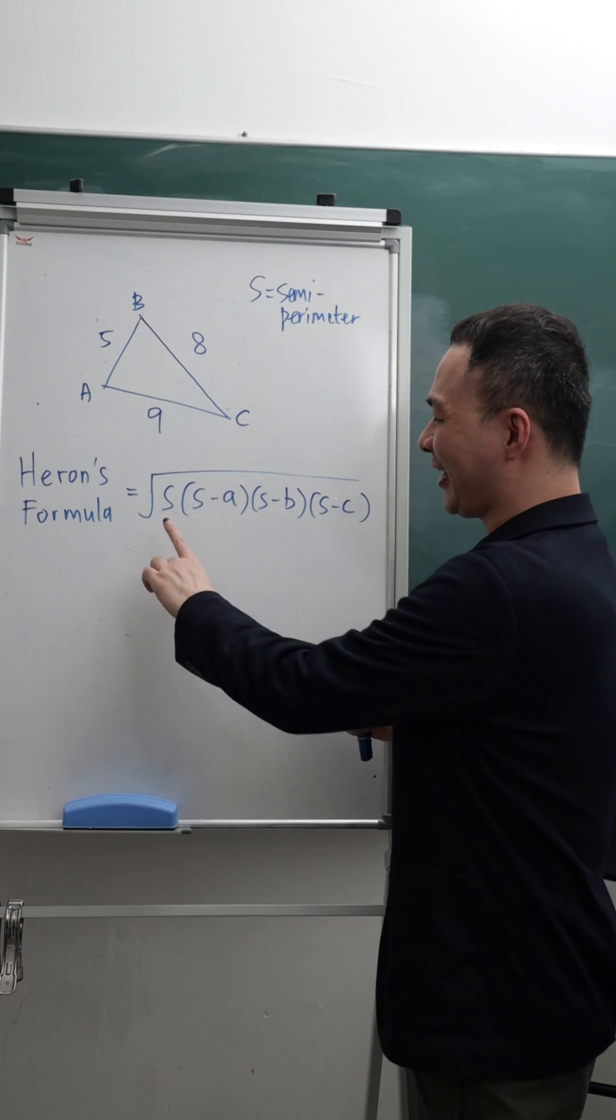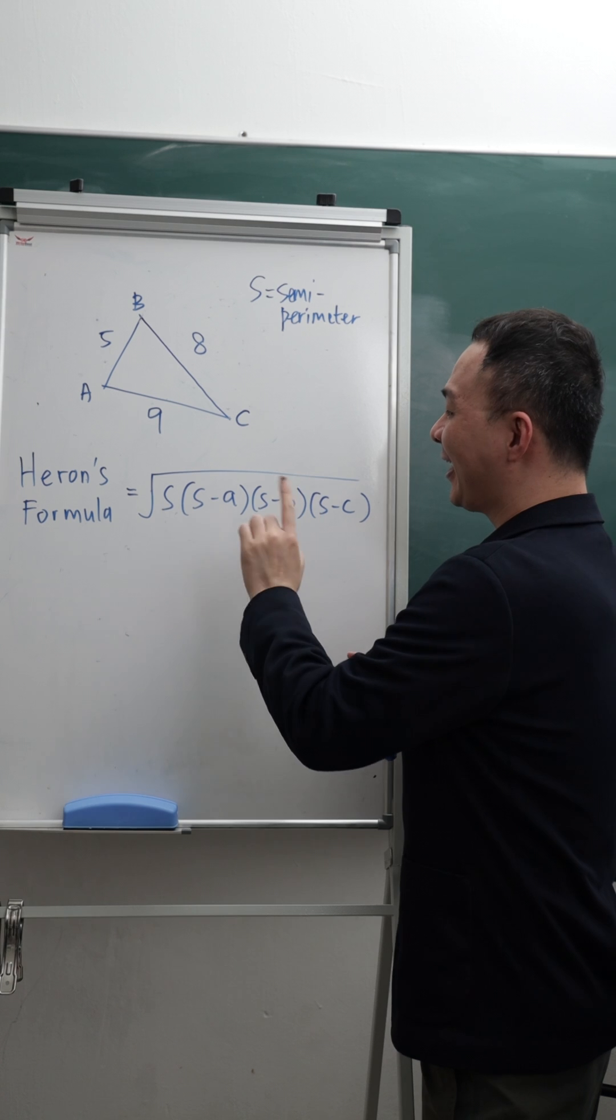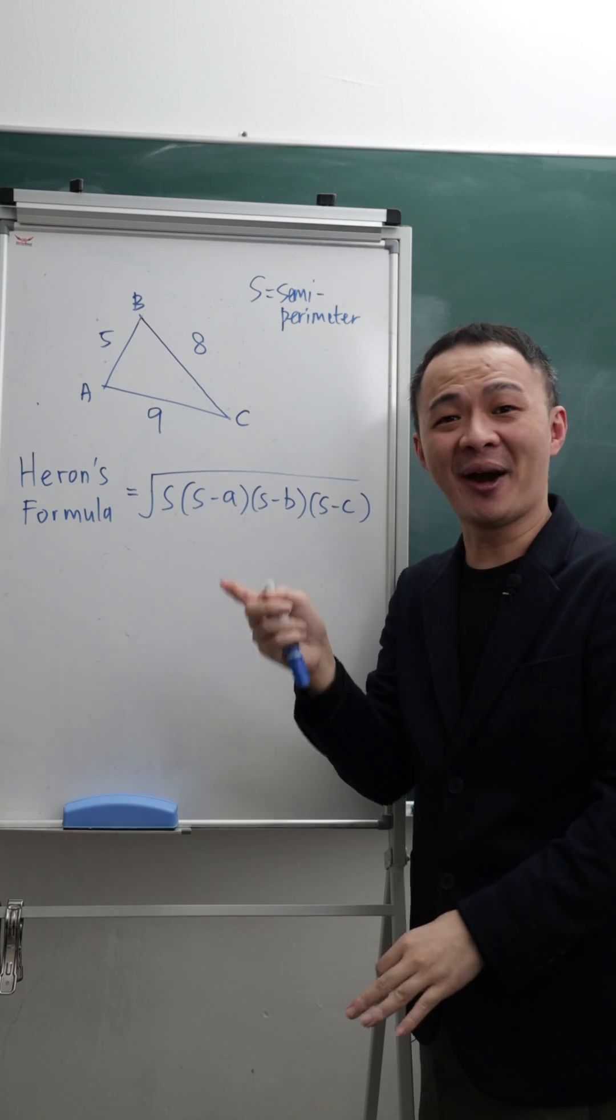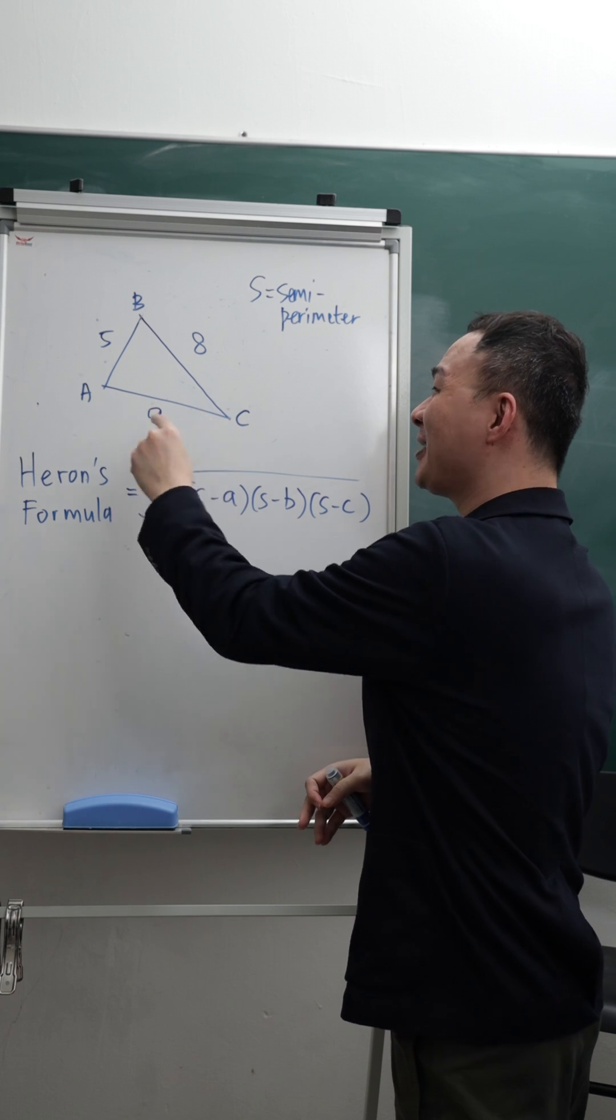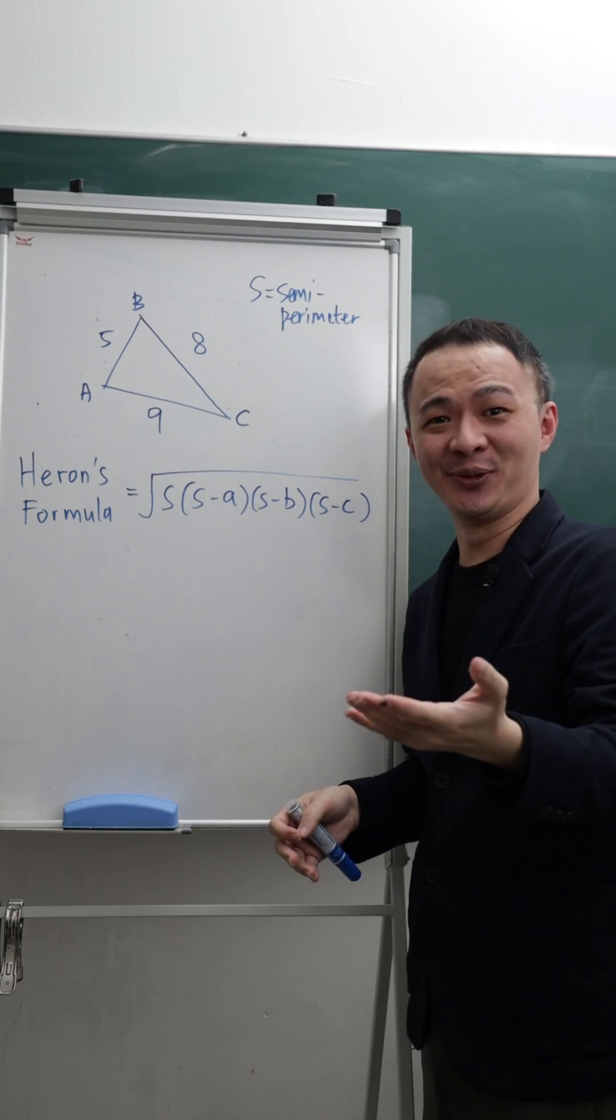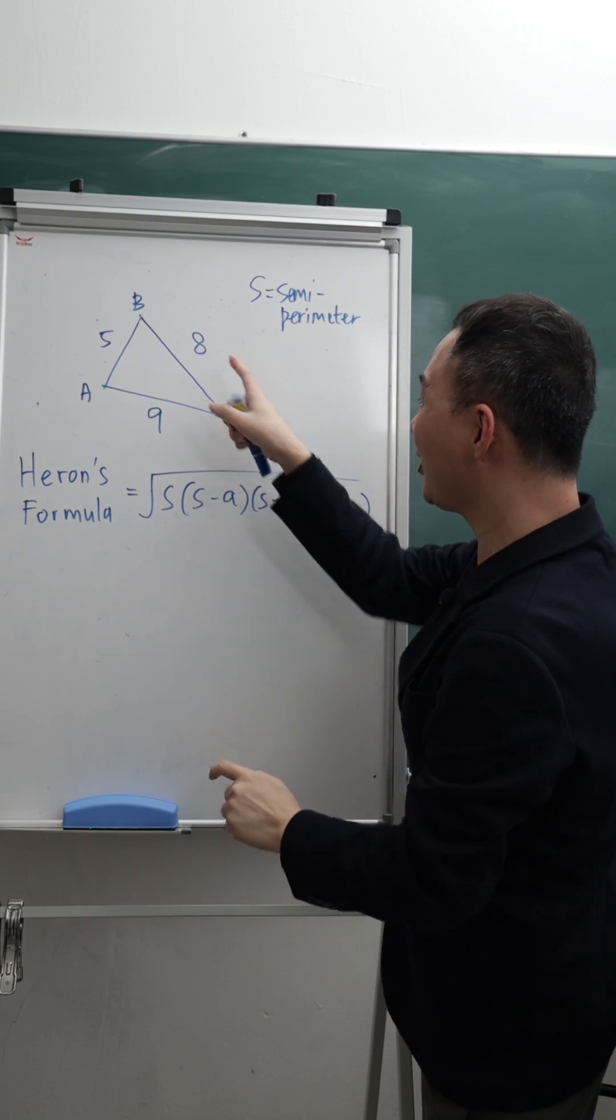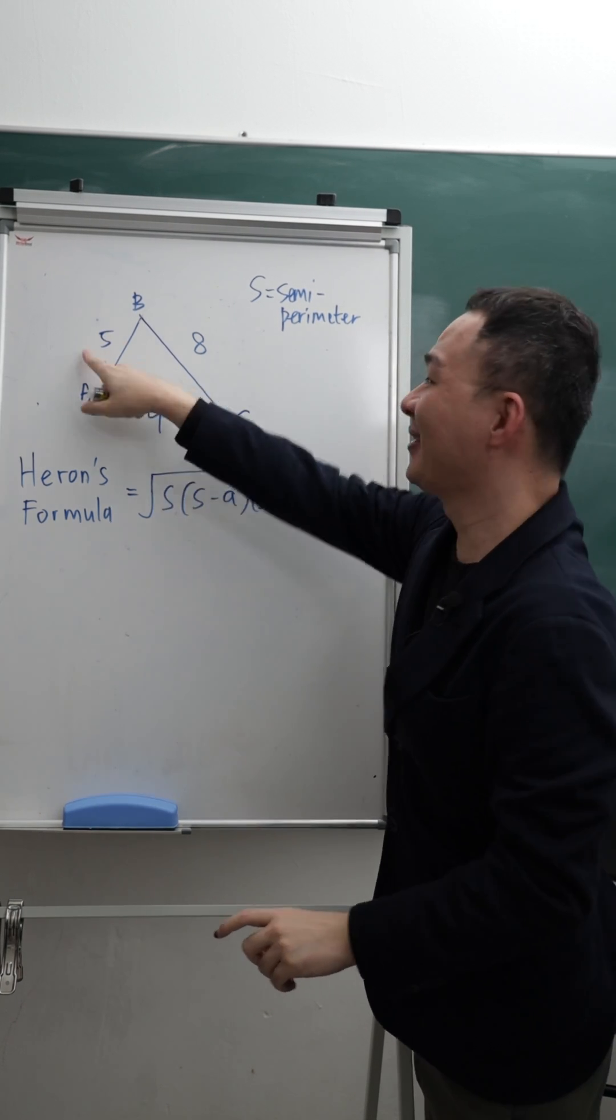Over here, you just need to understand what is S, A, B, and C. S will be very easy, we call it semi-perimeter, which is half of the perimeter. Basically means you add all the sides and then divide by 2. And then A, B, and C are just the three different side lengths here.